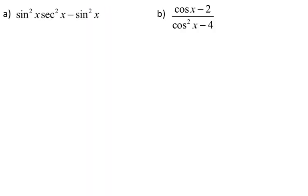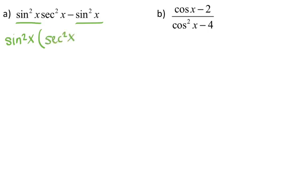The next problem, which should be labeled letter C, we have sine squared of x times secant squared of x, minus sine squared of x. Both terms have a sine squared of x in common, so we factor it out. Factoring out sine squared of x, the first term leaves secant squared of x, and factoring sine squared from sine squared leaves 1. So now we have sine squared of x times the quantity secant squared of x minus 1.